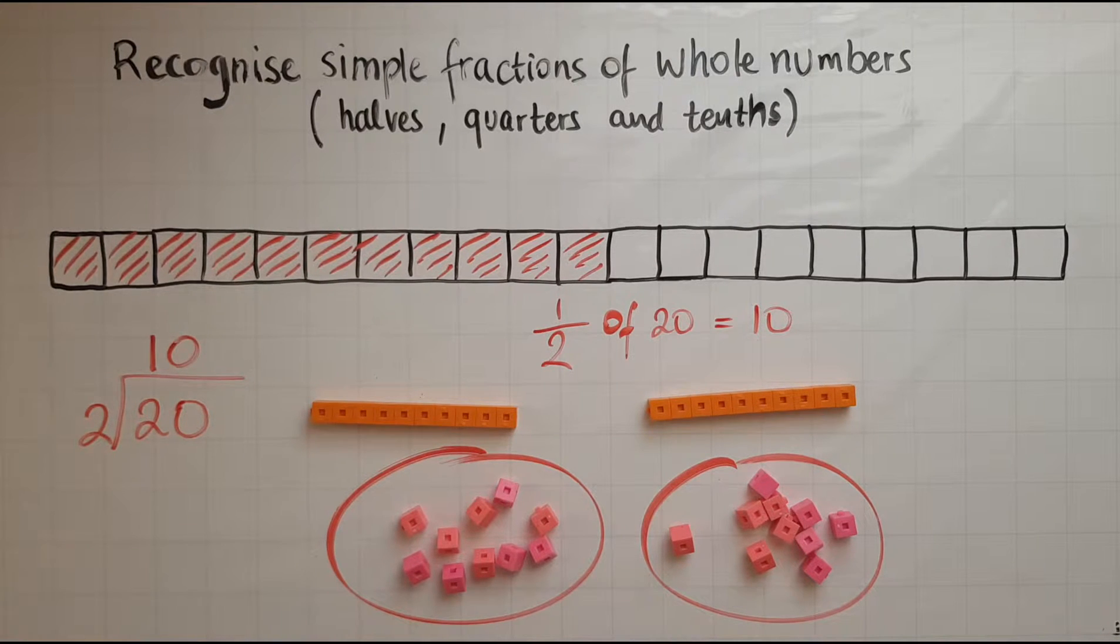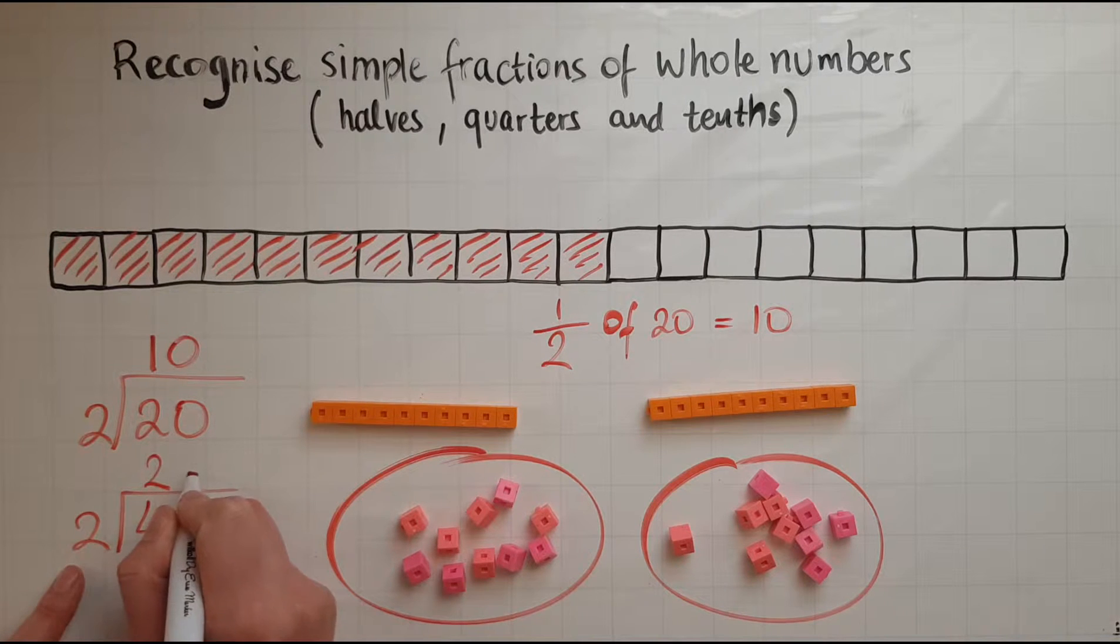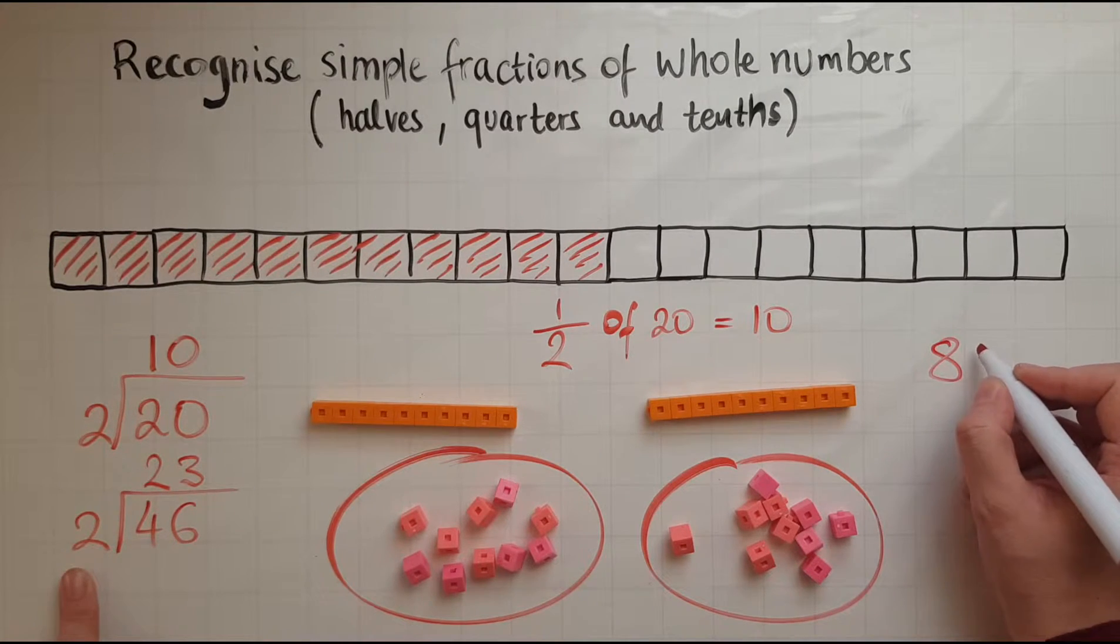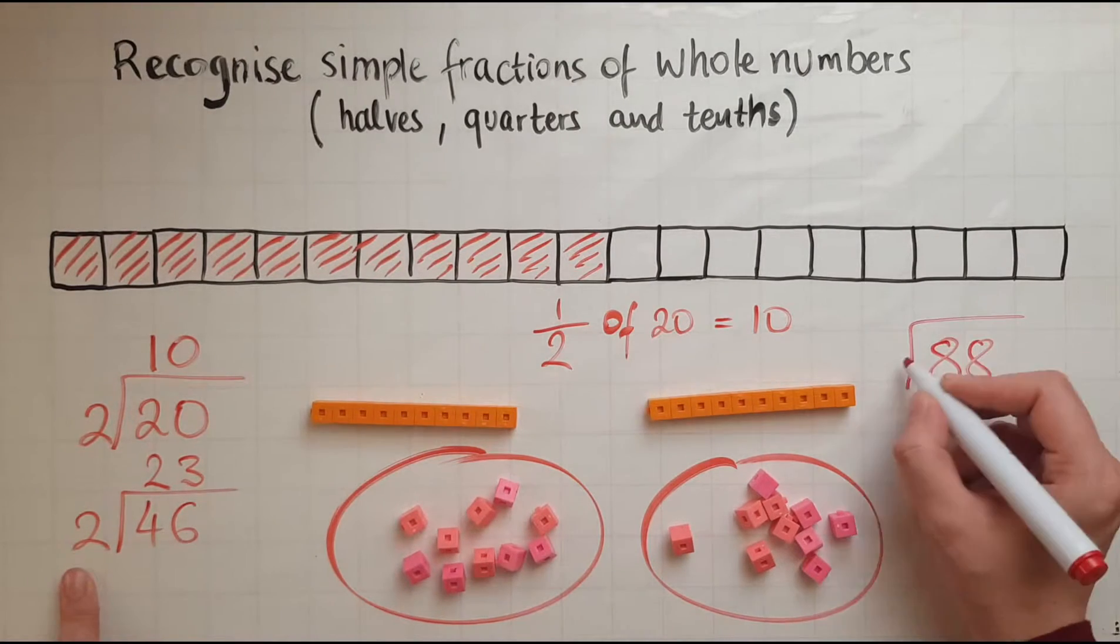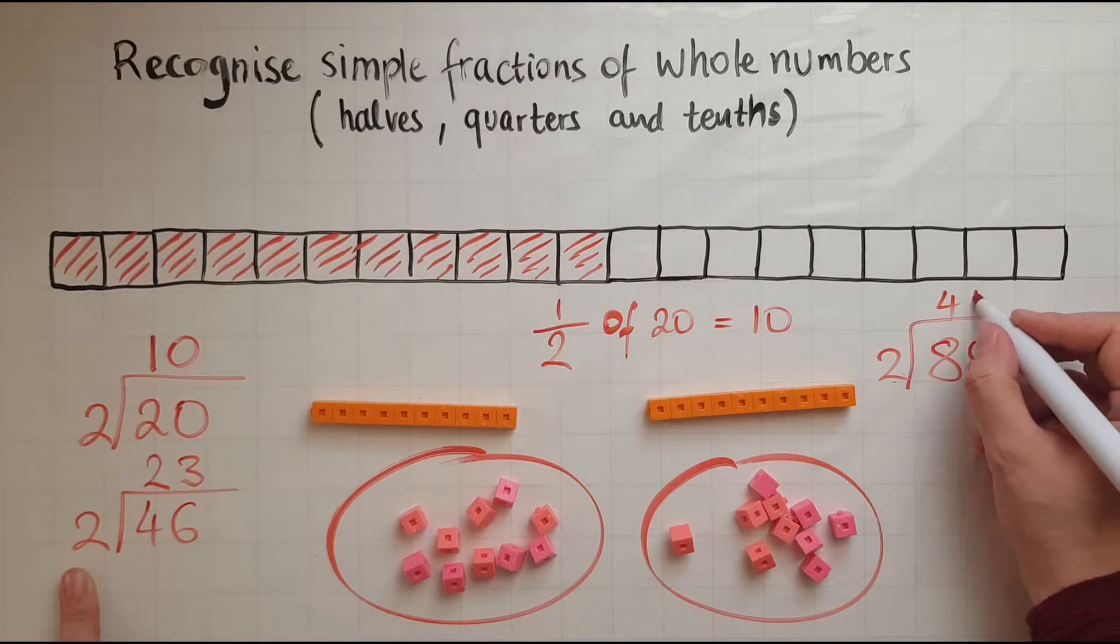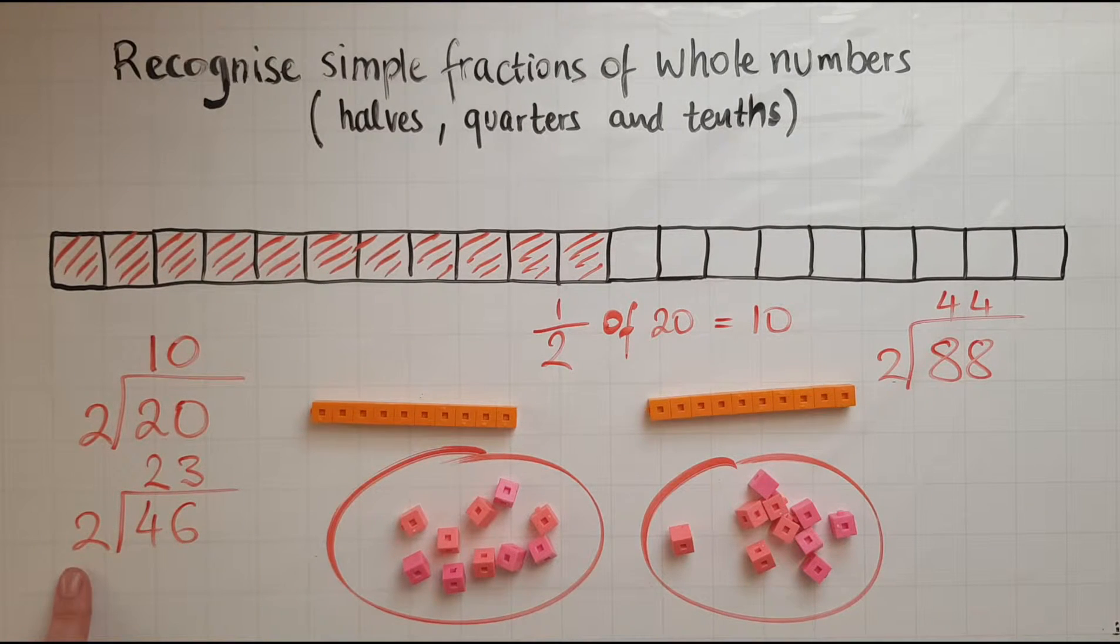So I could work out half of 46. So divide it by 2 or share it into 2 equal parts. So we've got how many twos into 4? That is 2. How many twos into 6? That would be 3. Let's say now we try 88. How many twos into 8? That's 4. 2 into 8? That's 4. So 44 is the answer.